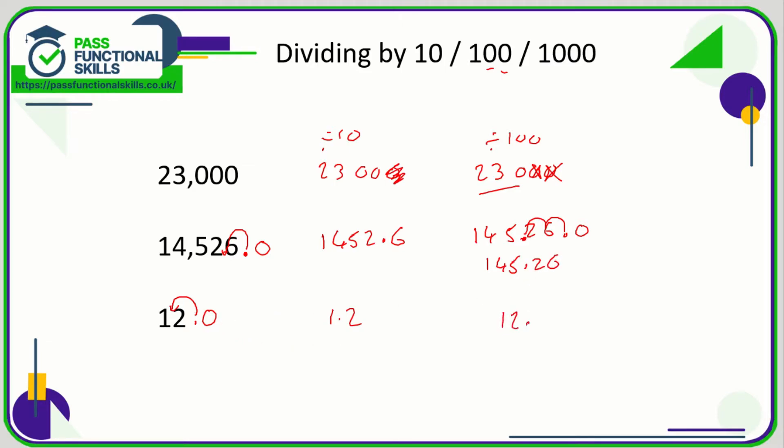Similarly, 12 can be written as 12.0, but now if I move it two positions it might be a little bit confusing. So we can always add some zeros to the left here, and now I'm just going to move that again two positions to the left because we're dividing by 100.